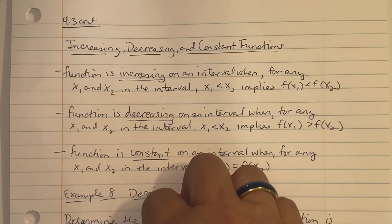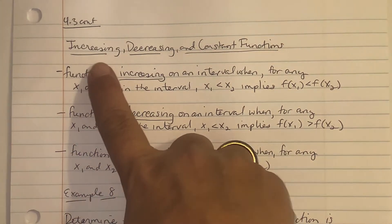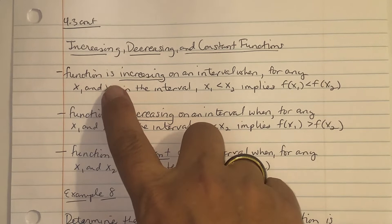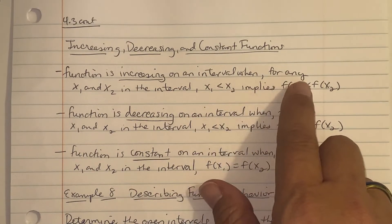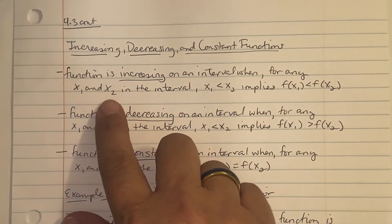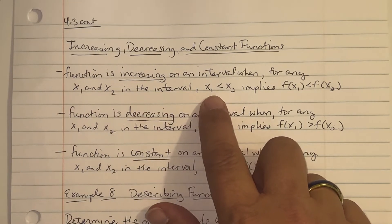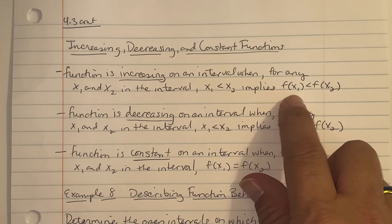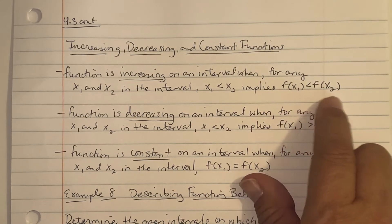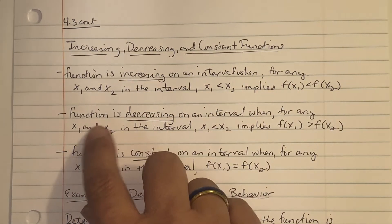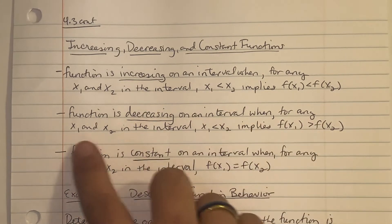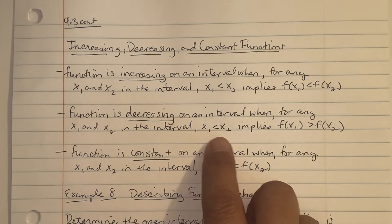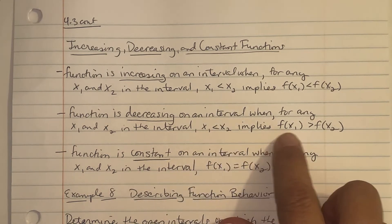Increasing, decreasing, and constant functions: a function is increasing on an interval when for any x₁ and x₂ in the interval, x₁ less than x₂ implies f(x₁) less than f(x₂). A function is decreasing on an interval when x₁ less than x₂ implies f(x₁) greater than f(x₂).